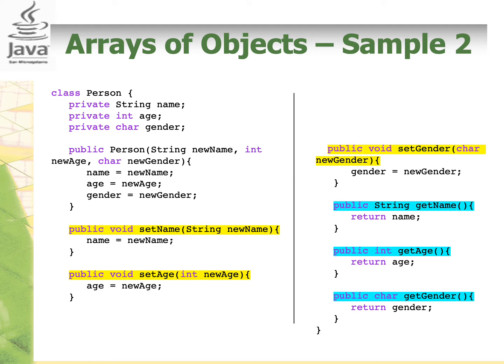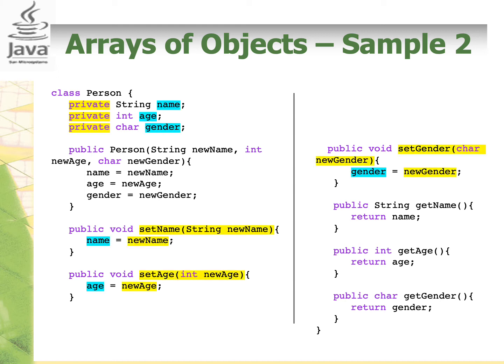Do you still remember why we need setter and getter methods? Because the instance variables are private, we cannot access name, age, and gender directly from another class. We can, however, access and modify the values through the constructor or the public methods — the setters and getters. If we do not have setters and getters, we have to create a new object each time we want to have new values for name, age, and gender. By using setters, we can reassign and modify the values of name, age, and gender of the existing objects. To access the values of private variables, we invoke the getter methods.